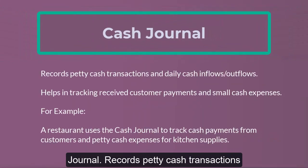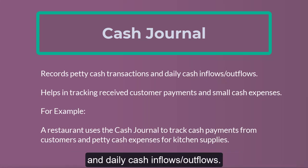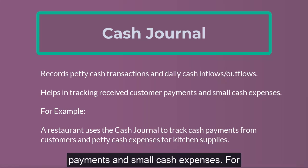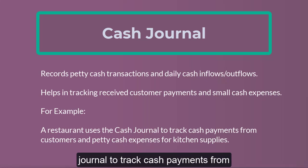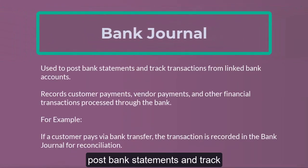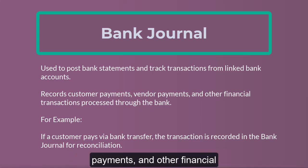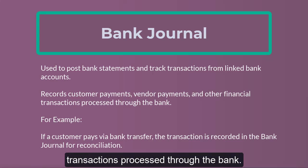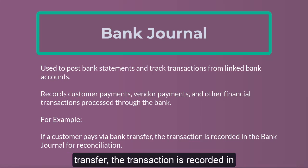The Cash Journal records petty cash transactions and daily cash inflows and outflows, helping in tracking received customer payments and small cash expenses. For example, a restaurant uses the cash journal to track cash payments from customers and petty cash expenses for kitchen supplies. The Bank Journal is used to post bank statements and track transactions from linked bank accounts, recording customer payments, vendor payments, and other financial transactions processed through the bank. For example, if a customer pays via bank transfer, the transaction is recorded in the bank journal for reconciliation.